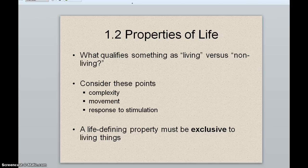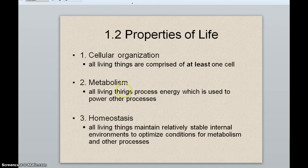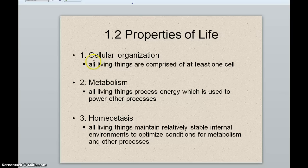There are five properties of life that all living things must have in order to be called living, plain and simple. We're going to talk about those, and then there's a sixth that higher-level organisms have that we'll also discuss. First, there is cellular organization. All living things are composed of at least one cell — there could be billions of cells like in humans, or just one cell like in a euglena, an amoeba, or a bacteria. There has to be at least one cell.